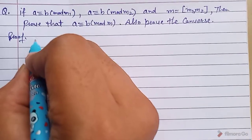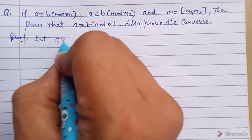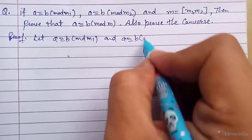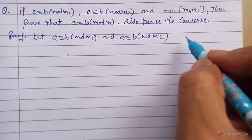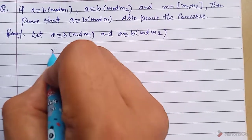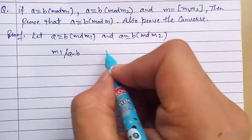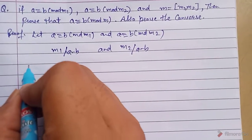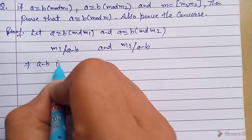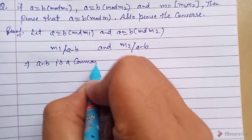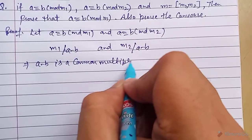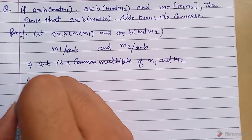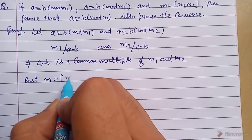Proof: Let a ≡ b (mod m1) and a ≡ b (mod m2). By definition of congruence, m1 divides (a − b) and m2 also divides (a − b). This implies (a − b) is a common multiple of m1 and m2.